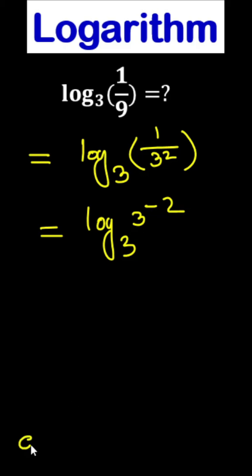We know a to the power minus n, it means 1 by a to the power n. So, we can same back like this.